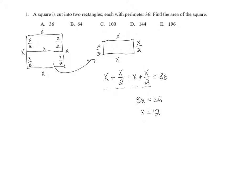But x was the side length of the square, and we want the area of the square. We know the area of a square is the side length squared. In this case, that's 12 squared, which is 144. And that is answer choice D.